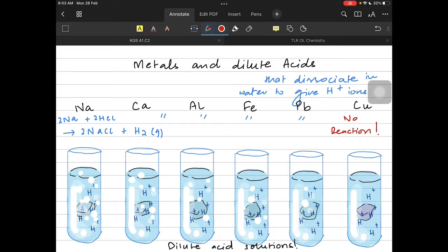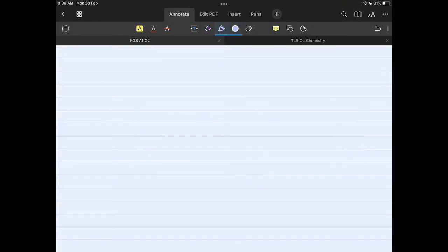Similarly, hydrogen is evolved from perhaps all the metals in this case except for copper, which means copper did not give any reaction even with dilute acid. Except for copper, all metals released hydrogen gas from reaction with dilute acids.